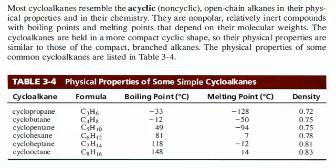The boiling point temperature is increasing with increasing size of the molecules — from C3H6 all the way to C8H16, the boiling point temperature is increasing. The melting point is also generally increasing, from negative 128 degrees Celsius to around 14, with some variation, but the overall trend is increasing. And the density is also increasing, from 0.72 up to 0.83 for cyclooctane.